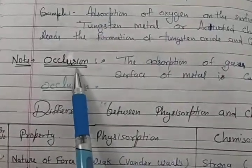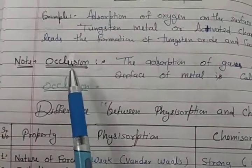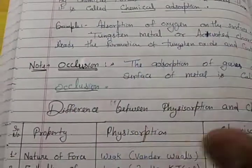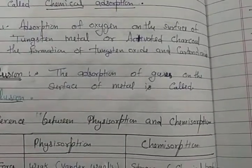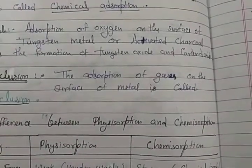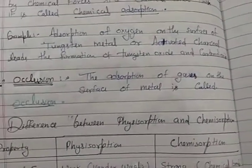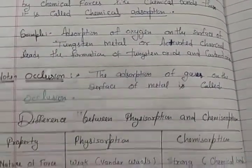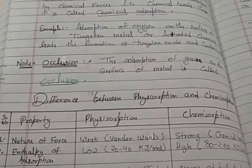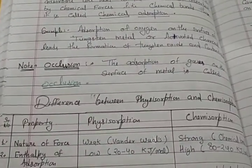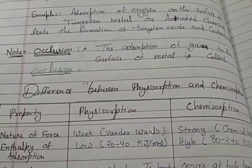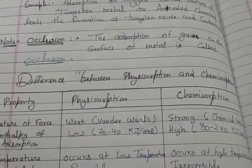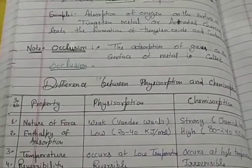A small related phenomenon is occlusion. Occlusion is the adsorption of gases on the surface of a metal. When gas gets adsorbed on a metal surface, this phenomenon is called occlusion.